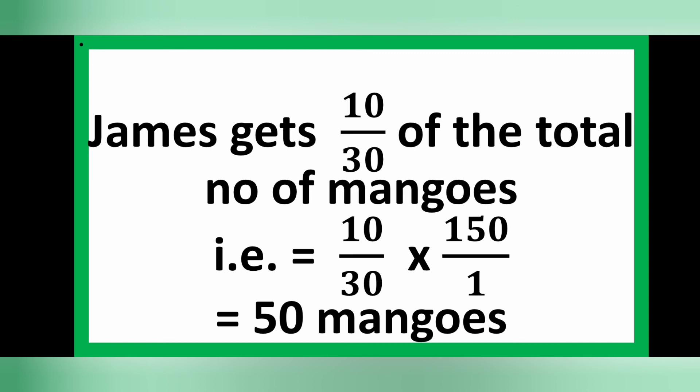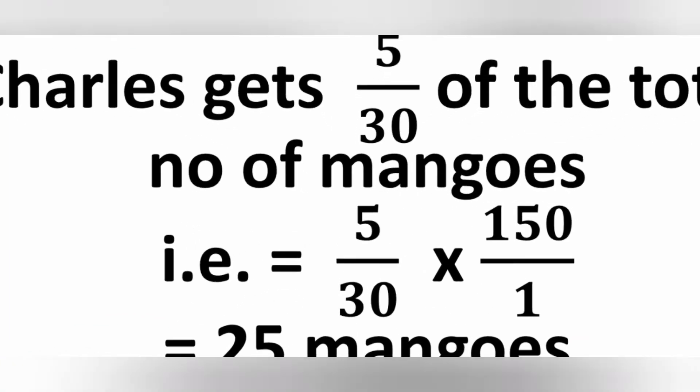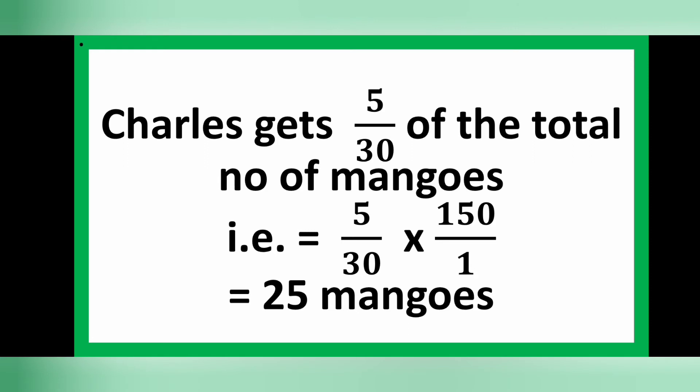For Charles: he gets 5 over 30 of the total number of mangoes, that is 5 over 30 multiplied by 150, which equals 25 mangoes. So Charles gets 25 mangoes.